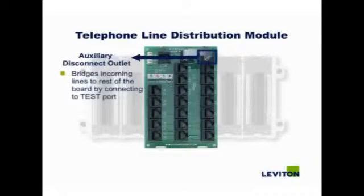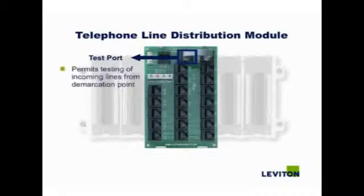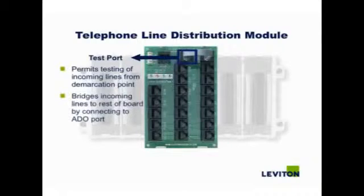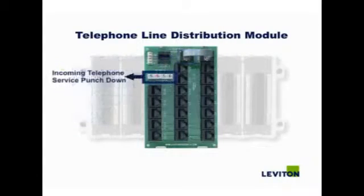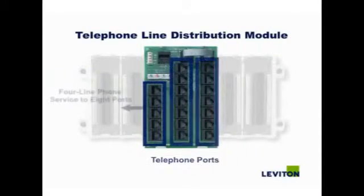The auxiliary disconnect outlet bridges incoming lines to the rest of the board by connecting to the test port. The test port lets you test incoming lines from the demarcation point. It bridges the incoming lines to the rest of the board by connecting to the ADO port. This is the incoming telephone service punch-down, and it is where you punch down the phone lines from the demarcation point.